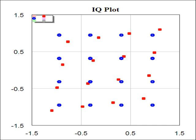Phase imbalance leads to the IQ plot being skewed, as indicated by the red points.